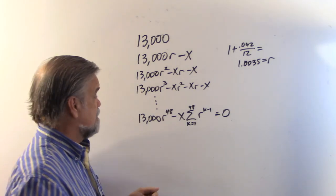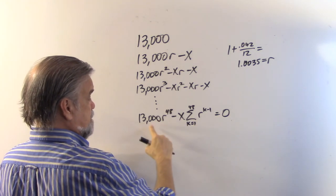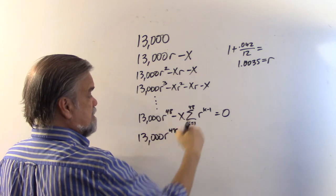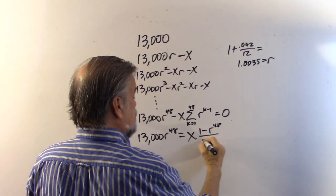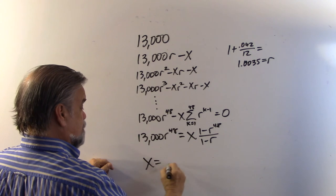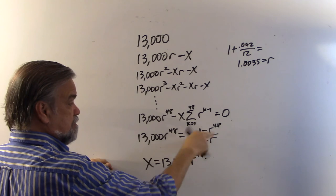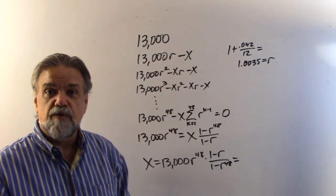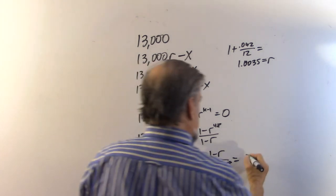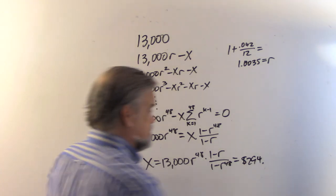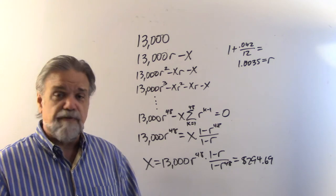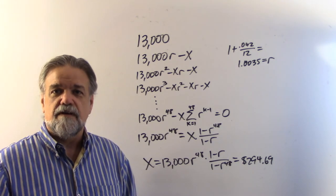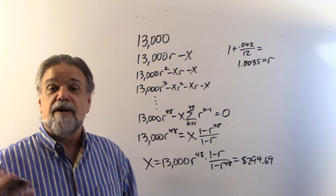She wants the balance to be zero after the 48th payment. So 13,000 times R to the 48th equals X times (1 minus R to the 48th) over (1 minus R). Solving for X: X equals 13,000 times R to the 48th times (1 minus R) over (1 minus R to the 48th). With R equal to 1.0035, that gives X equals $294.69. So Jillian, if you pay $5,000 upfront and just under $300 a month after that, that car is yours.